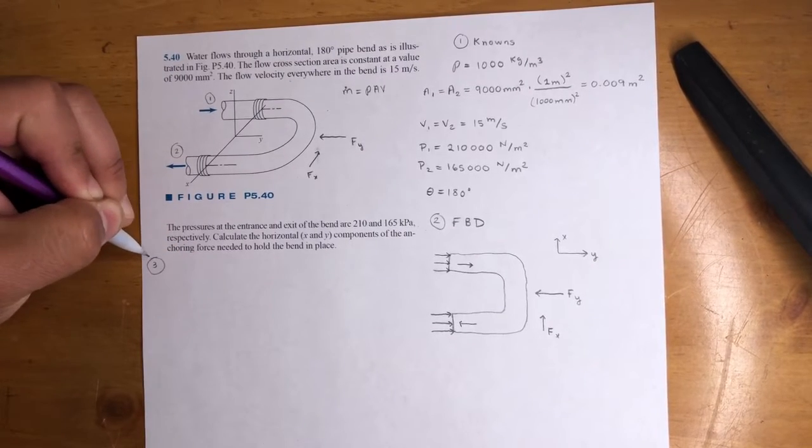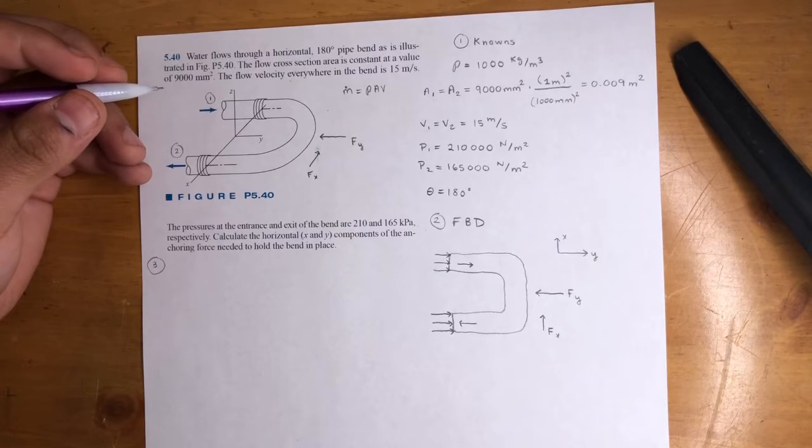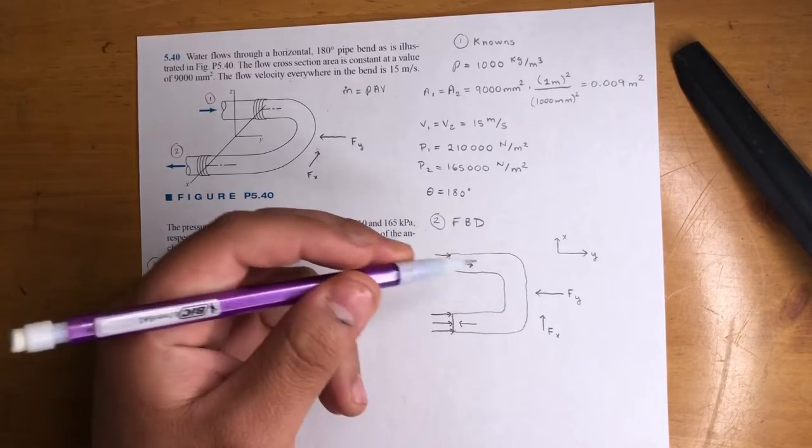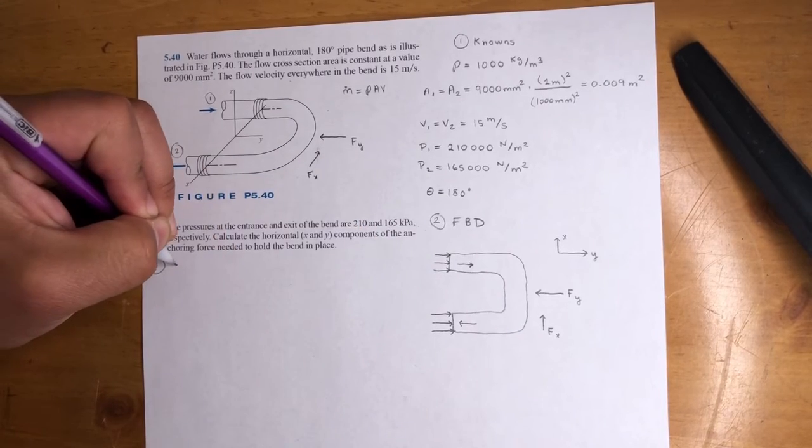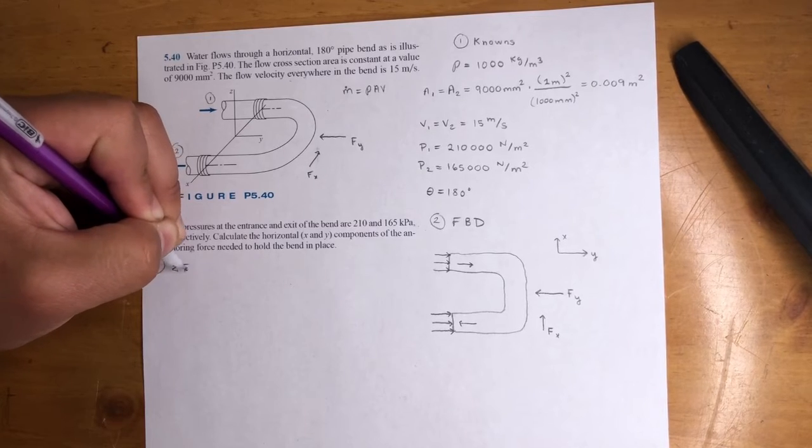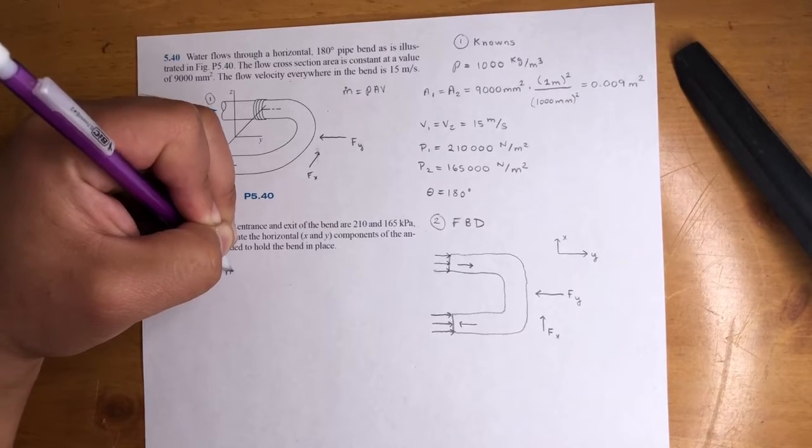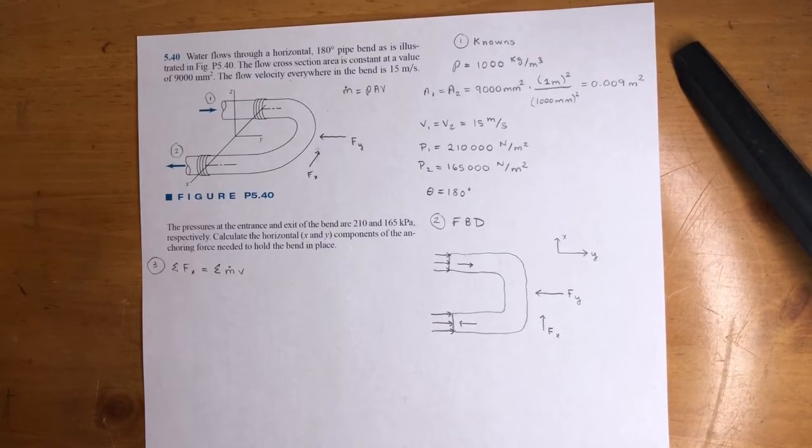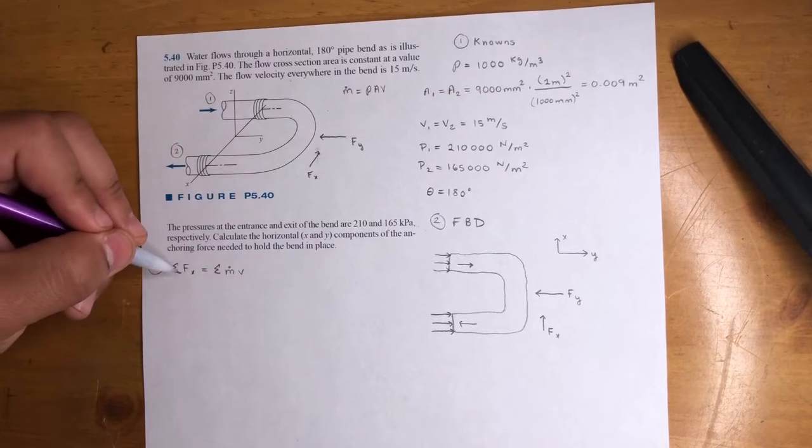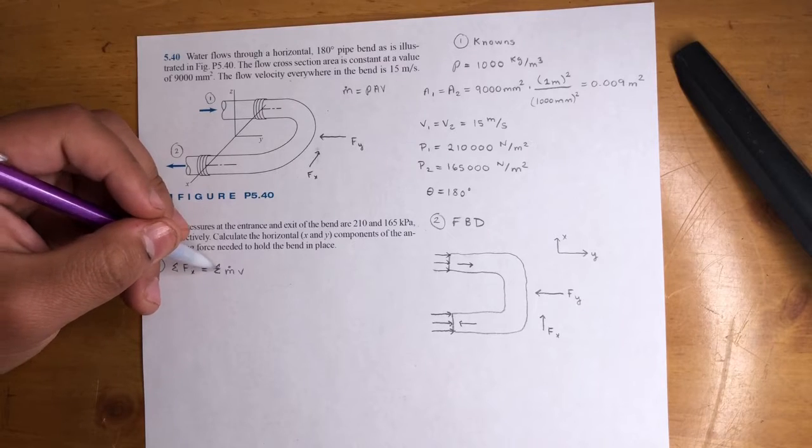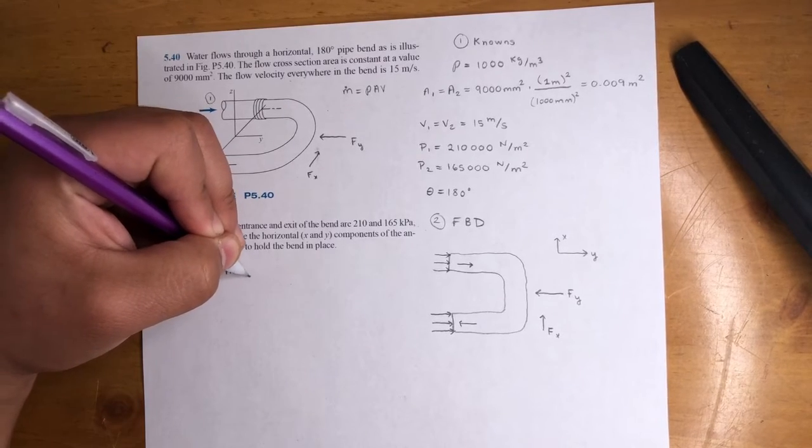So step three, we got to do X and Y, so let's do X first. Now, just by looking at this, I don't think there's anything in the X except the one we assumed. But the equation is, some of the forces in the X direction is equal to the sum of the linear momentum in the X direction as well. Let's just put X.